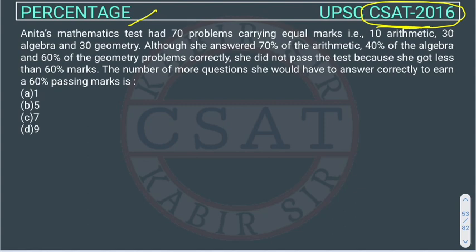Anita's mathematics test had 70 problems. So how many problems are there? 70 problems. They have not given the marks but they are saying that there are 70 problems and each have equal marks.